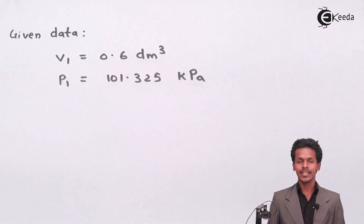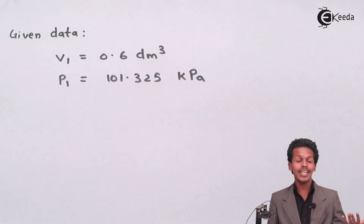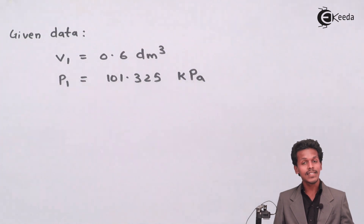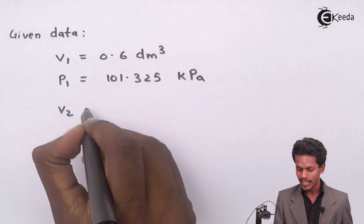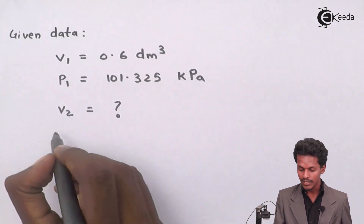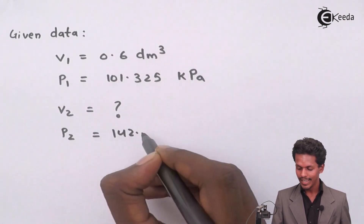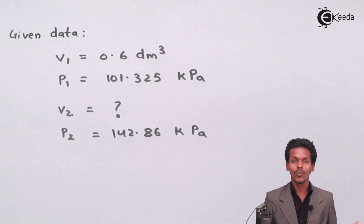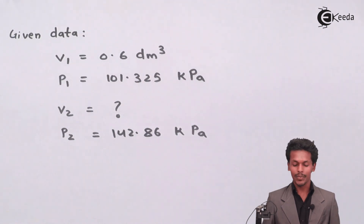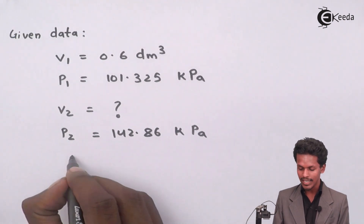What they are asking is to calculate the volume of the gas if its pressure is increased to 142.86 kPa. Since the temperature is also constant, we have to calculate V2 — that is, the volume when the pressure is increased to P2 = 142.86 kPa. We need to find the volume of that particular gas at constant temperature.